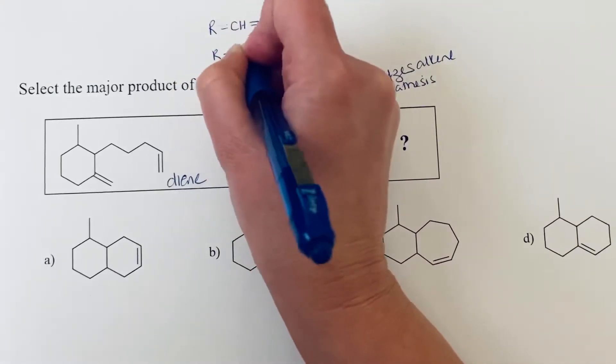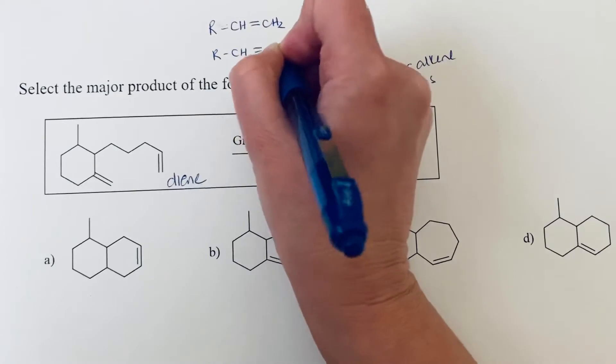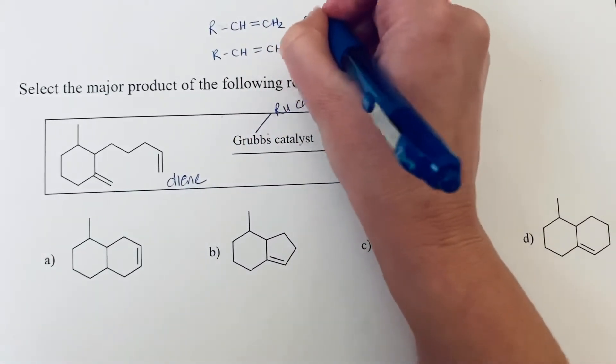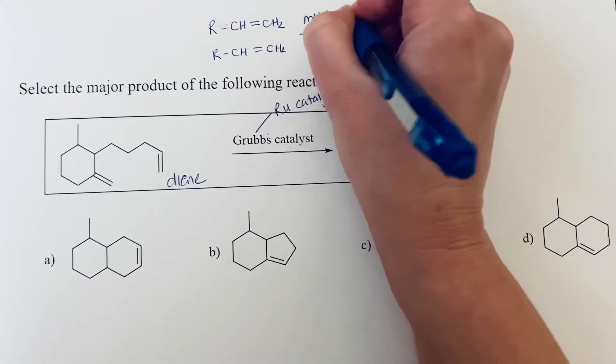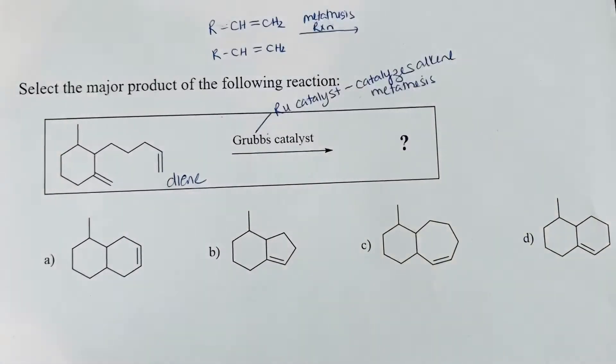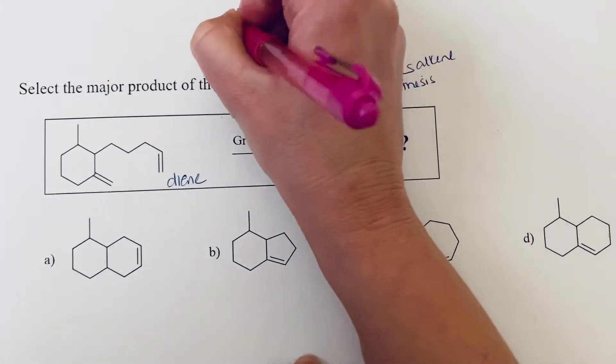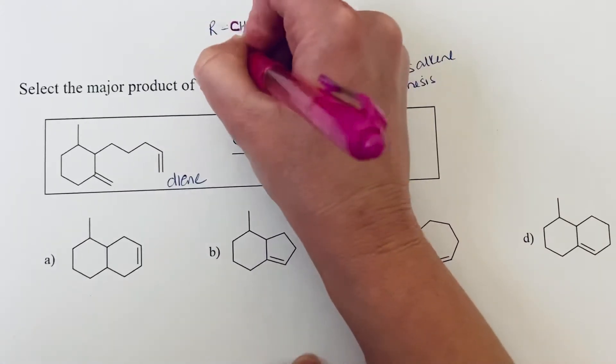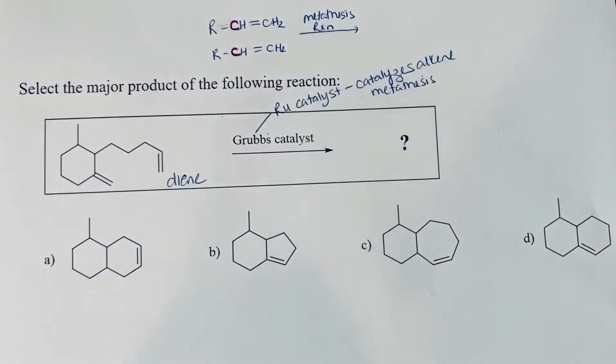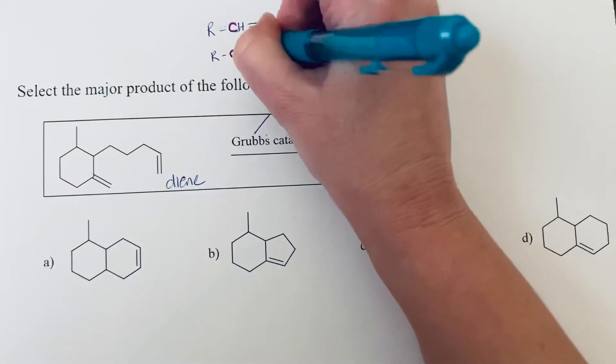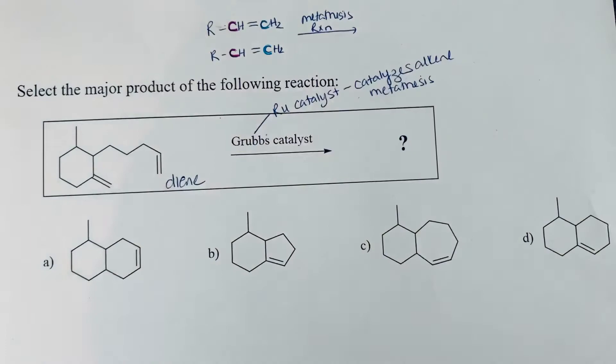And if we have another alkene that lines up with it, what takes place in this metathesis reaction is essentially that the alkenes switch partners so that this carbon atom here highlighted in pink will end up with a double bond to the other carbon in pink. And that these two carbons will be attached to each other. And so this is what will happen in your product.